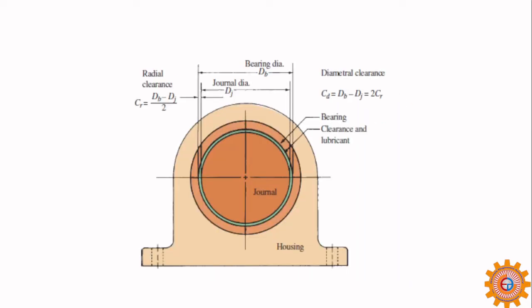This is a cross-sectional view of a journal bearing, in which a hole is created into which a bush is inserted. This journal is nothing but a shaft. You can also draw the journal bearing as shown here — this is the side view.